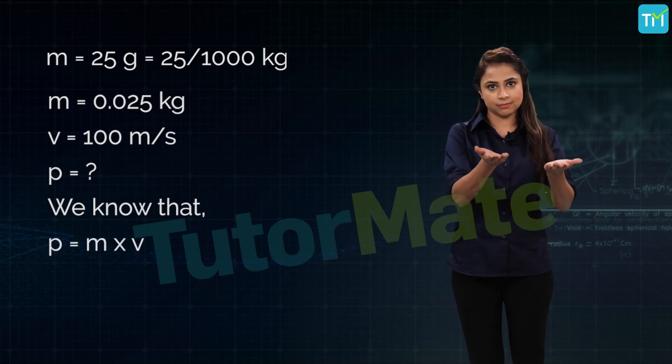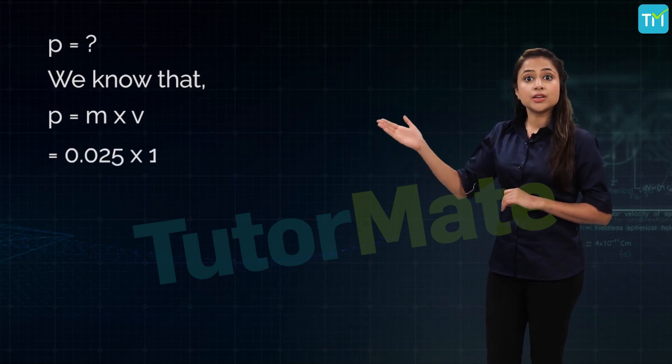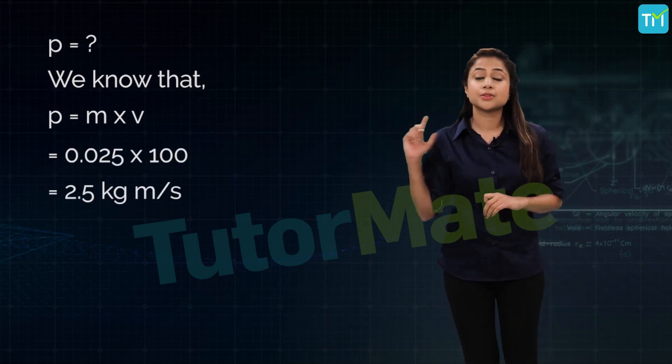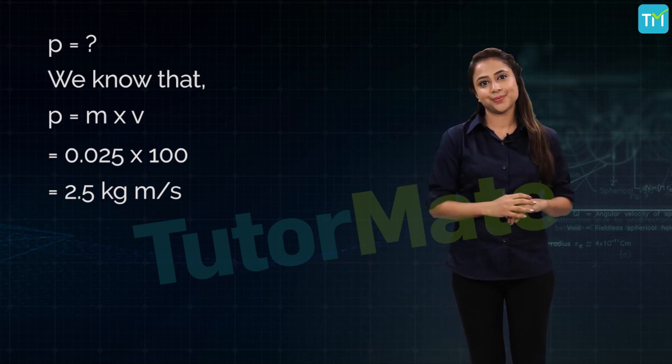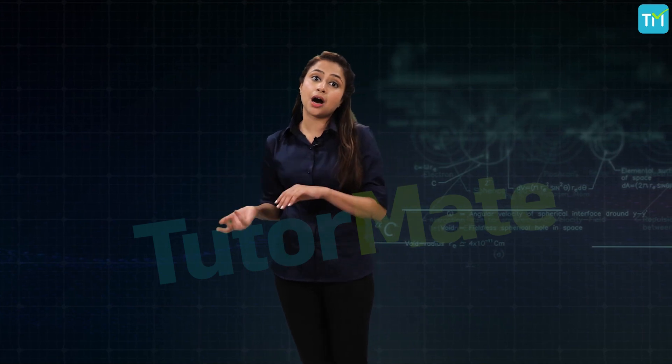Multiplying mass into velocity, we get momentum p, which is 0.025 into 100, which is 2.5 kilograms meters per second. So we know we can calculate momentum when mass and velocity are given. Similarly, we can calculate mass or velocity when the other two factors are given because it's an equation.